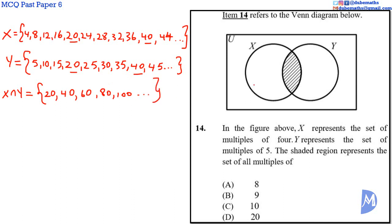Thus, the shaded region X intersect Y represents the set of all multiples of 20. The answer is D.